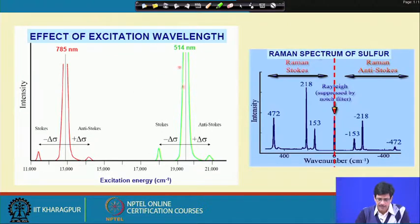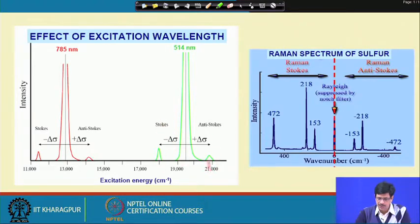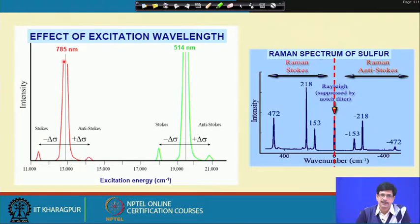Or we can use a solid-state diode laser emitting at 785 nanometers. We will discuss which wavelength to choose later, but shorter wavelength means higher frequency and higher excitation energy — the green argon ion laser at 514 nm is higher energy, while the 785 nm diode laser has much less energy.